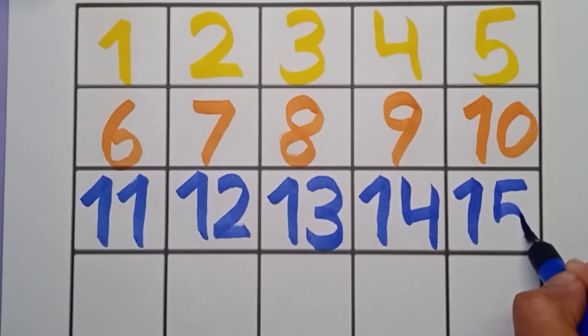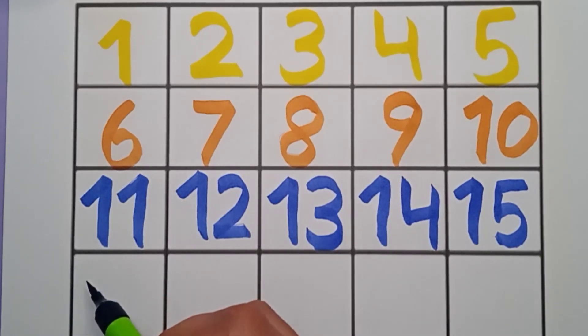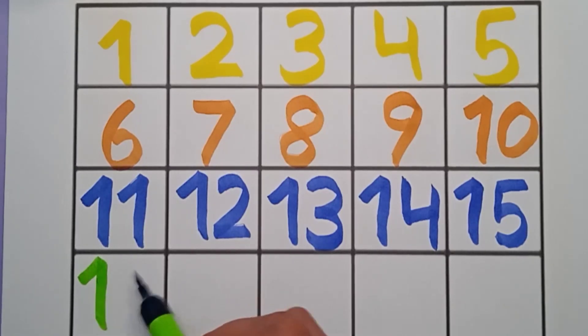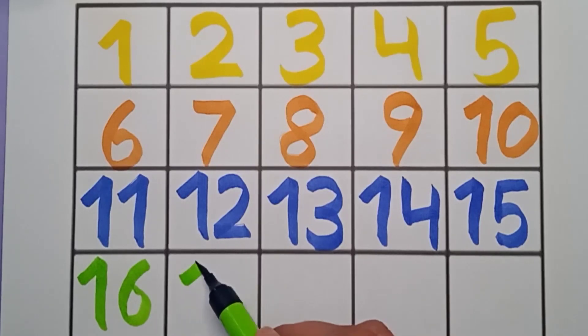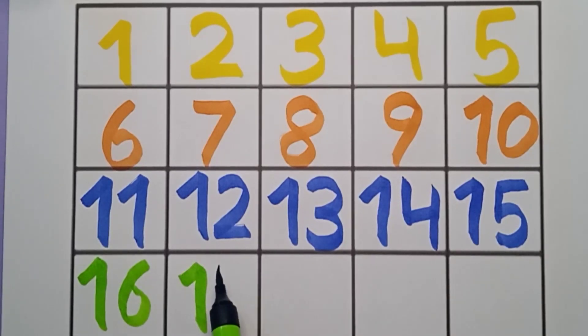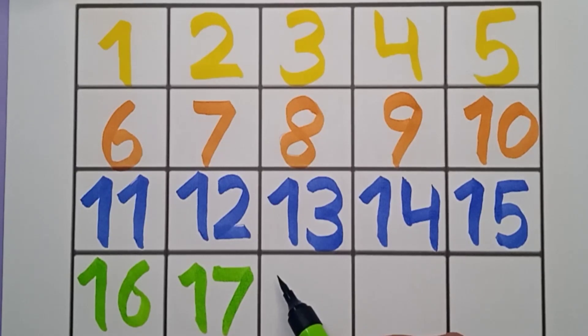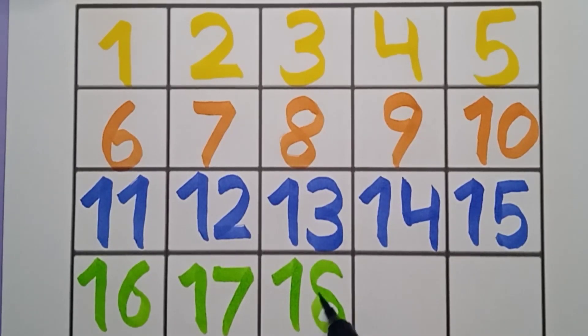Next number is sixteen. It's a green color. Sixteen, sixteen. Next is seventeen, seventeen. What comes after seventeen? Eighteen, eighteen, eighteen.